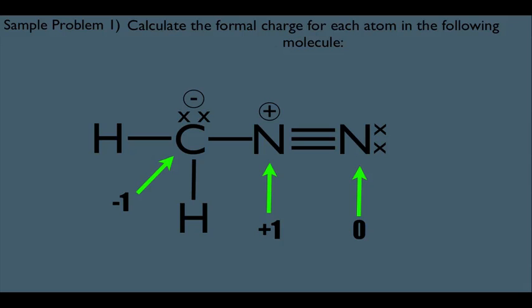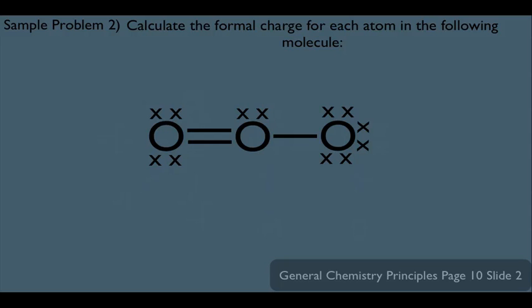Let's look at another example: what are the formal charges on these oxygens? The first oxygen has two bonds to the right and two lone pairs — that gives it a zero formal charge. The central oxygen has two bonds to the left, one bond to the right, and one lone pair — that's a case where oxygen is plus one. The last oxygen has one bond to the left and three lone pairs, so it has a negative one formal charge.